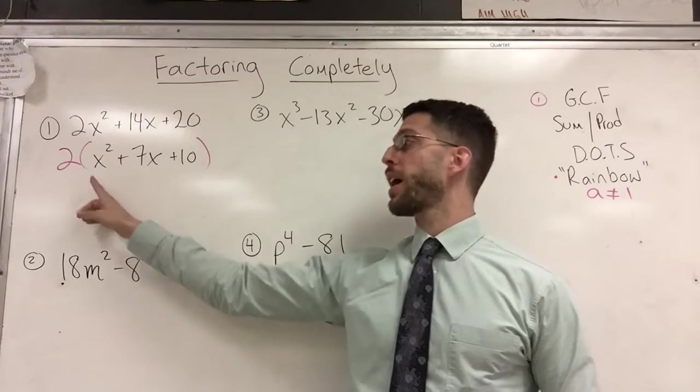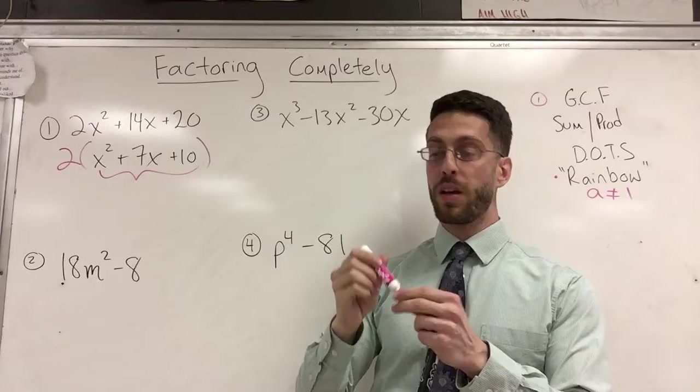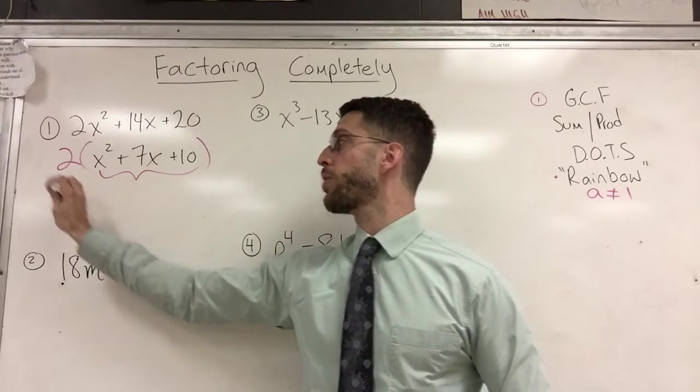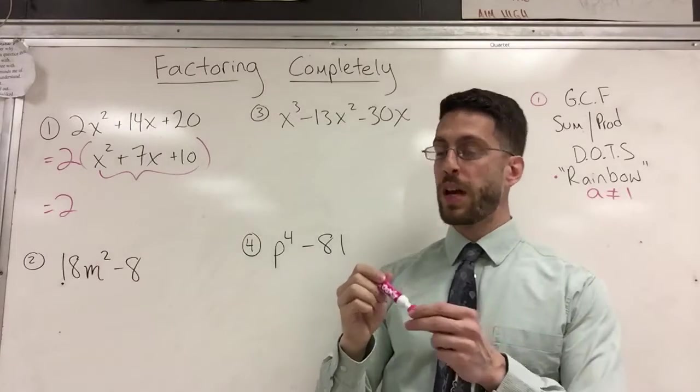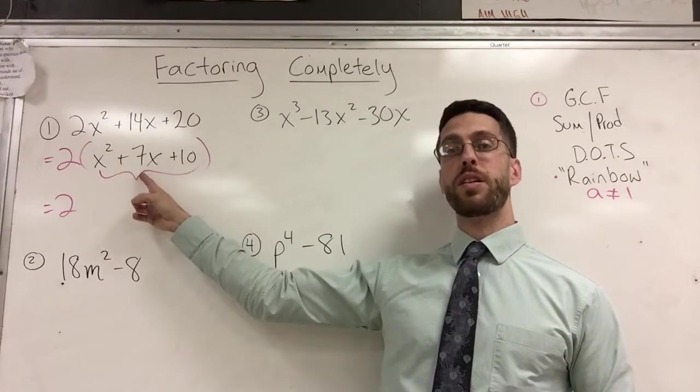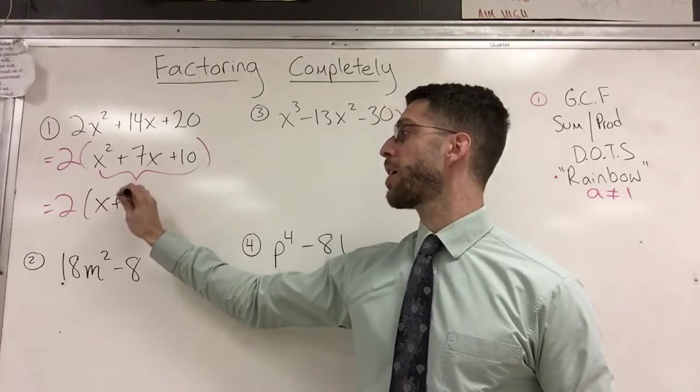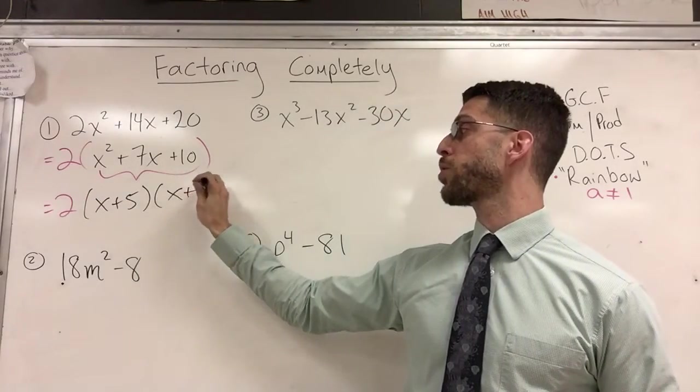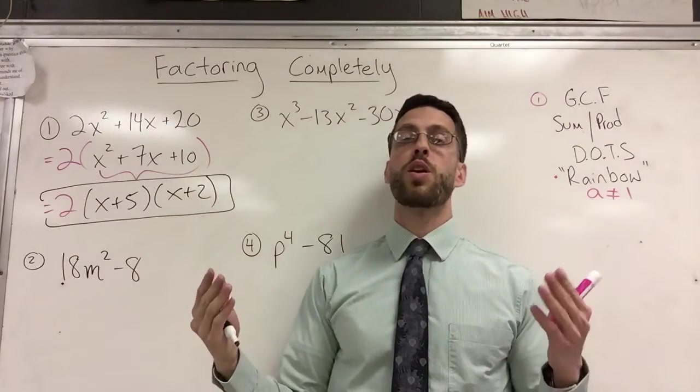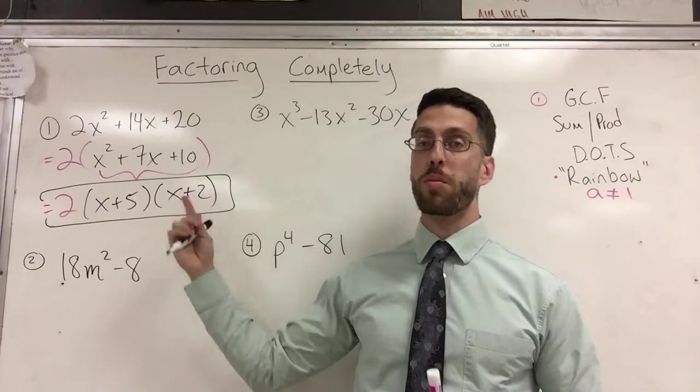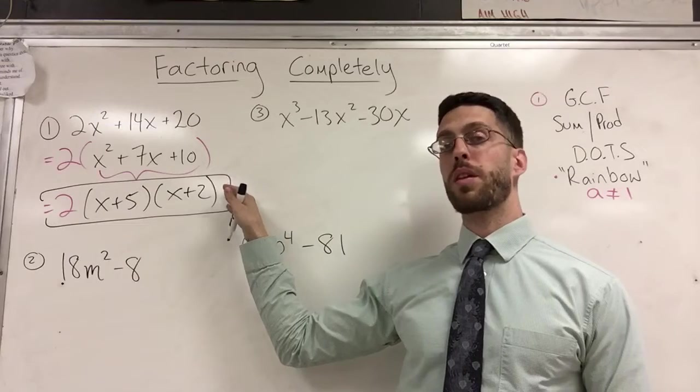Look at this trinomial, it's a quadratic, a is equal to one. You can go with the sum product method. So this two, that GCF of two, it drops down. And now I'm looking for two numbers whose sum is seven and whose product is 10. And that is going to be X plus five times X plus two. So this video is basically taking my other videos and just putting two methods in one problem. All right. So factoring completely is checking for GCF, doing second method. Sometimes it's even a third method.